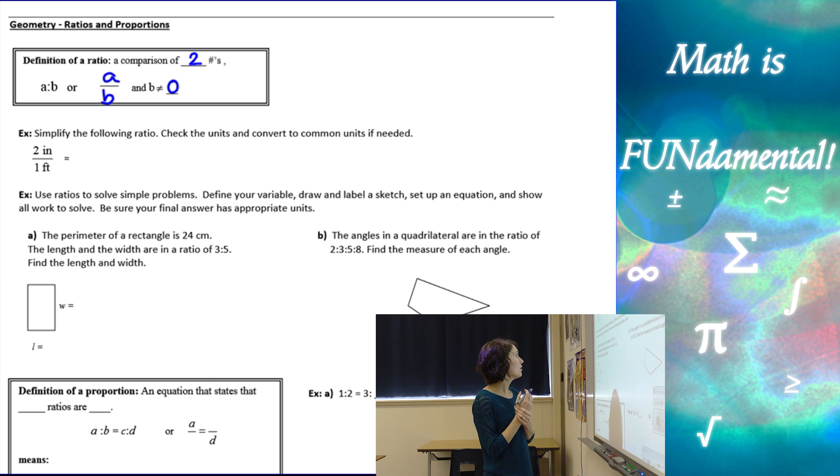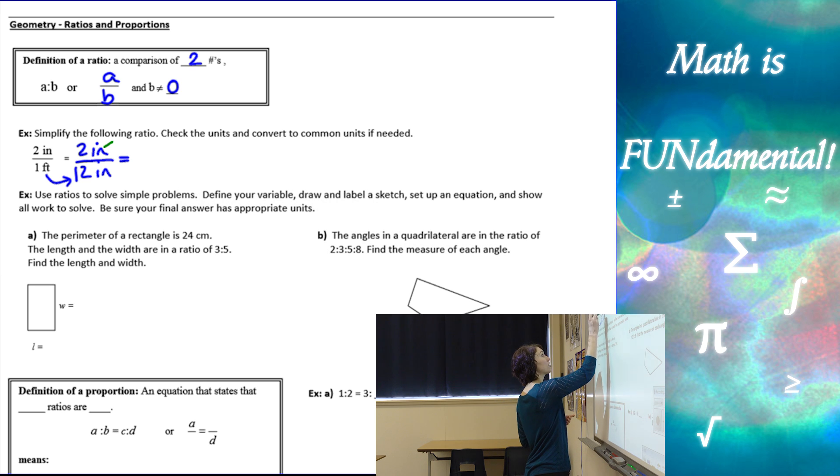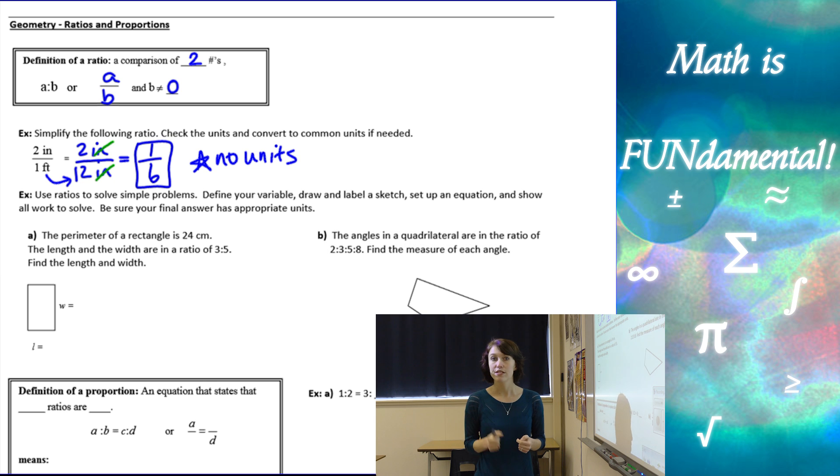Let's look at a quick example. Simplify the following ratio, and we have to make sure to convert our units. Here we have 2 inches over 1 foot. Since they don't have the same units, we need to convert so that 1 foot is 12 inches. Now when we do our simplifying, the cool thing about ratios is, once the units are the same, they actually cancel each other out. The answer is only 1 over 6 with no units. It's really important that you remember when you're simplifying ratios, there are no units in a ratio when you simplify it.